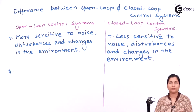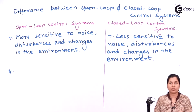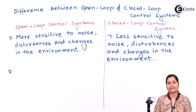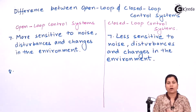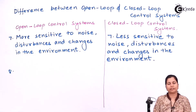The next difference between the open loop and closed loop control system is that in the open loop control system, optimization is not possible because there is no feedback structure, so no comparison or changes can be made. Whereas in closed loop control systems, optimization is possible because there is a feedback structure and a comparator which compares the feedback signal with the input signal and then makes further changes.